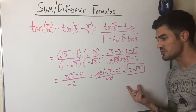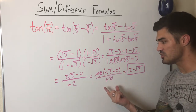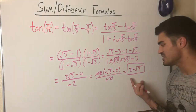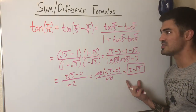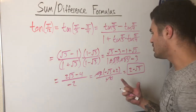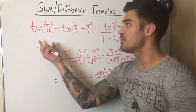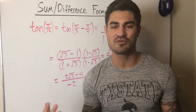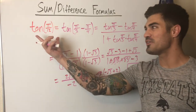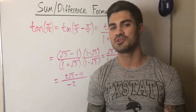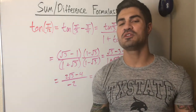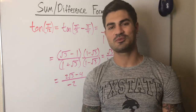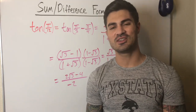Maybe you could stop at an earlier step depending on your professor's instructions, but 2 − root 3 is the fully simplified form. You can punch it into a calculator for an approximation, but we were able to find tangent of π/12 using sum and difference identities without a calculator — pretty cool! Hopefully this video helped; hit thumbs up, subscribe for more, and keep flexing those brain muscles.